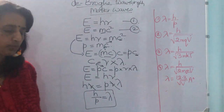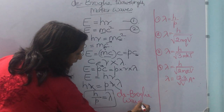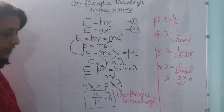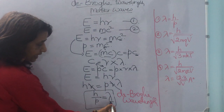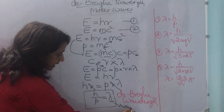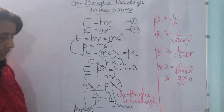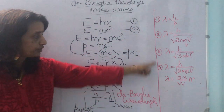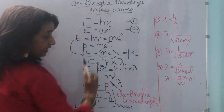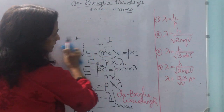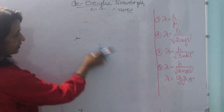This is de Broglie's wavelength for a photon. It is applicable only for particles with very small mass that are moving. The lambda side of the equation shows wave characteristics while the other side shows particle characteristics. Before we begin quantum mechanics in detail, we will see many other forms of this equation because we need them in our numericals. Form 1: lambda = h/p. Now let us derive the second equation: lambda = h / √(2mqV).